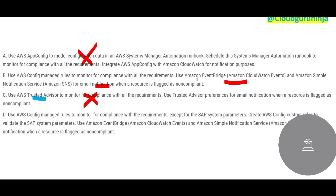Option D says it will use Config managed rules to monitor compliance with all requirements except the SAP system parameters. SAP is a special thing — you cannot give it the same treatment as other parameters. For SAP system parameters, you have to use custom rules because AWS managed rules do not directly cover SAP KPIs and metrics. Option B only uses managed rules, so it cannot handle SAP monitoring properly.